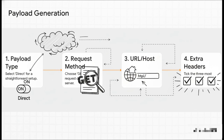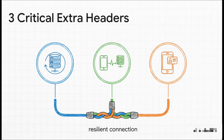First, we set the payload type to direct. Second, we pick the GET request method — that's just the standard way of asking a server to send us stuff. Third, we pop in our host address. And then finally, and this part is really important, we select three specific extra headers. These three little checkboxes are, according to the tutorial, totally non-negotiable if you want a reliable setup. Online Host tells the app to just keep trying if the connection drops. Keep Alive is basically you yelling at the server, 'Hey, I'm still here, don't hang up on me.' And User Agent just lets the server know what kind of device you're on. Put them all together and you get a way more stable connection.